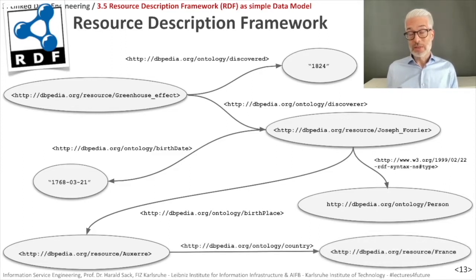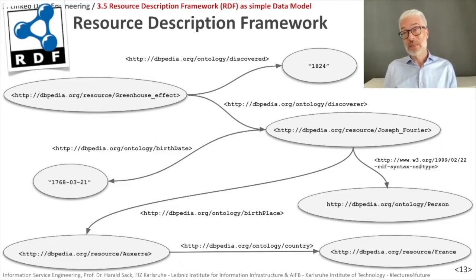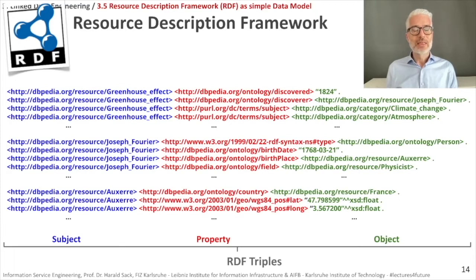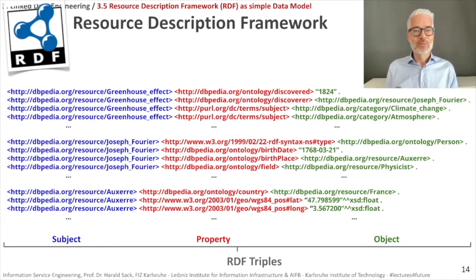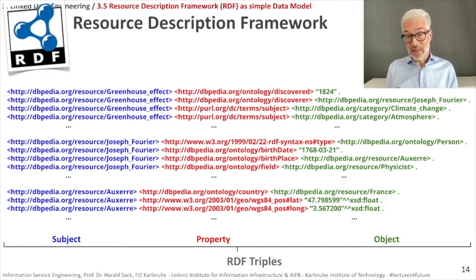This is quite nice for small examples, but a graph of edges and nodes is not easily transferred into a computer. Therefore there is a serialization of that kind of graph. We have already seen N-triples, and we can write everything here in forms of triples. Subjects are mentioned in blue, properties in red, and the object part — either a value or a literal — in green. All of these things have different URIs.